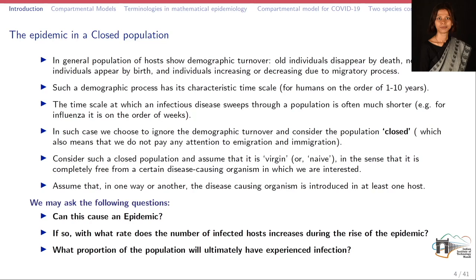Any demographic process has its own characteristic time scale. For humans, it is of the order of 1 to 10 years. The time scale for any infectious disease is usually very short — for example, for influenza, this is in the order of weeks. In such cases, we choose to ignore the demographic turnover. This means we ignore emigration and immigration, any change in the population due to that, while modeling any epidemic using our mathematical model. In that case, what we call that particular population is closed.